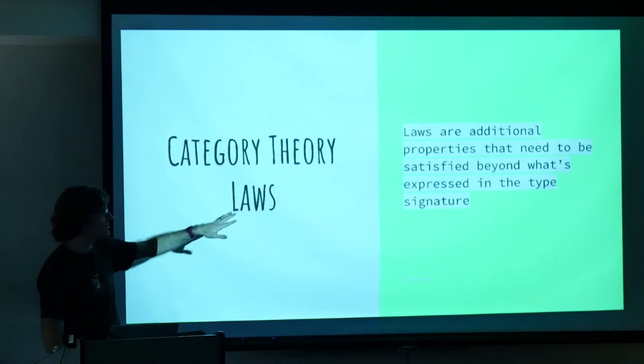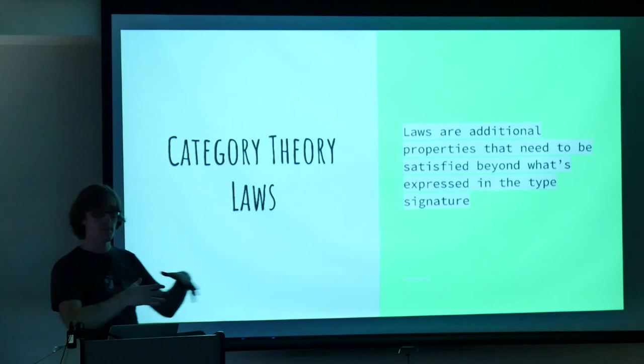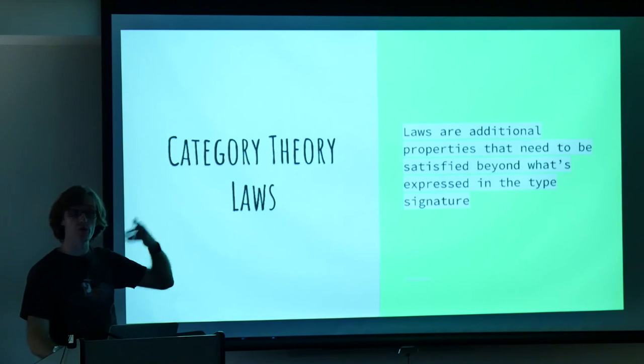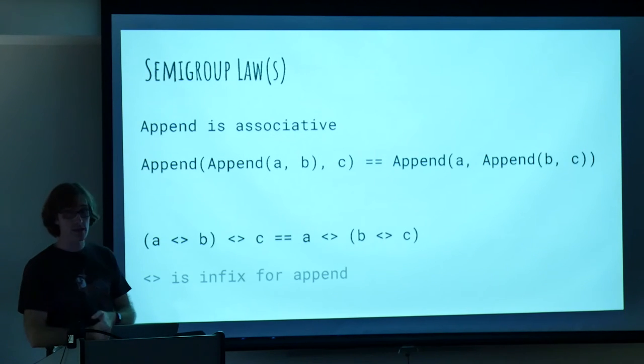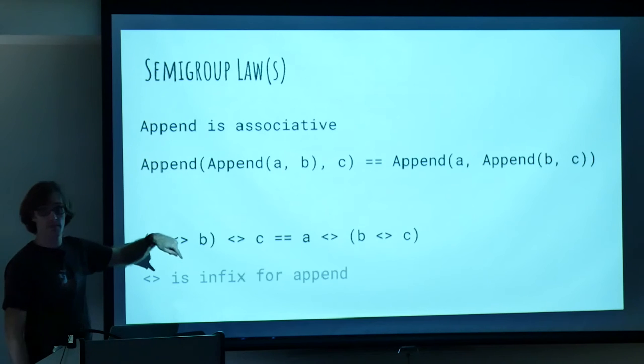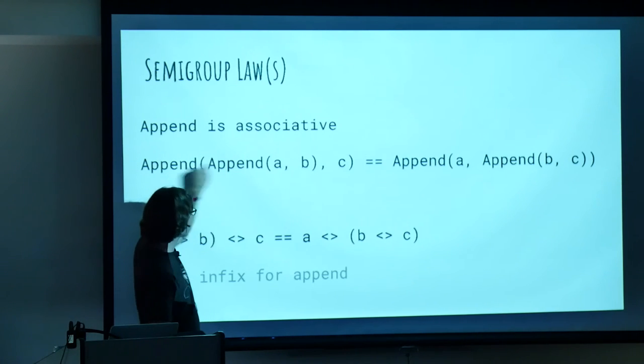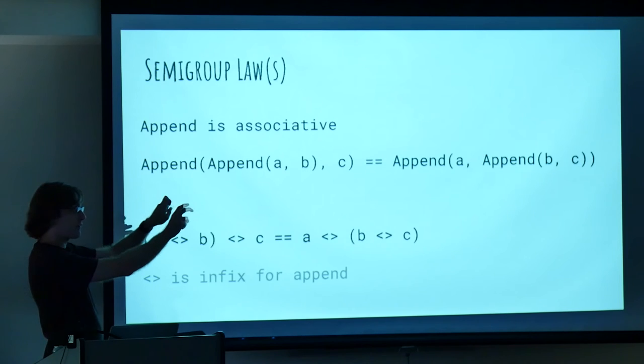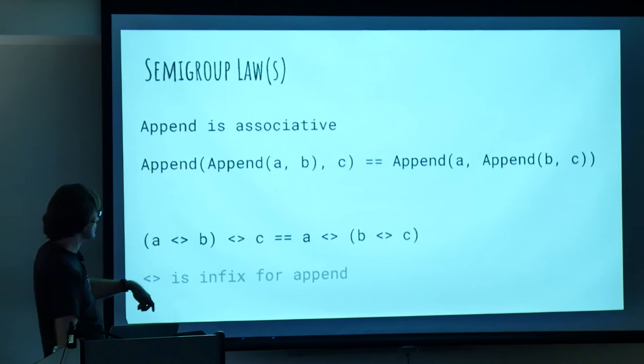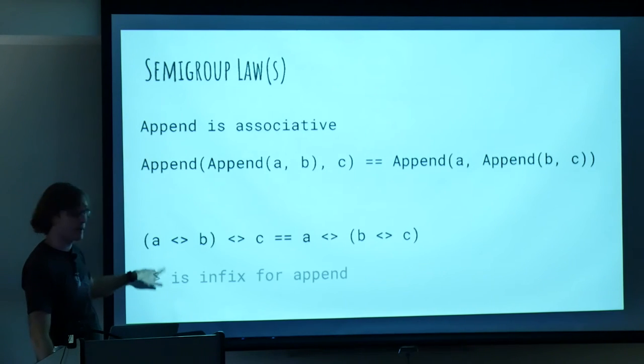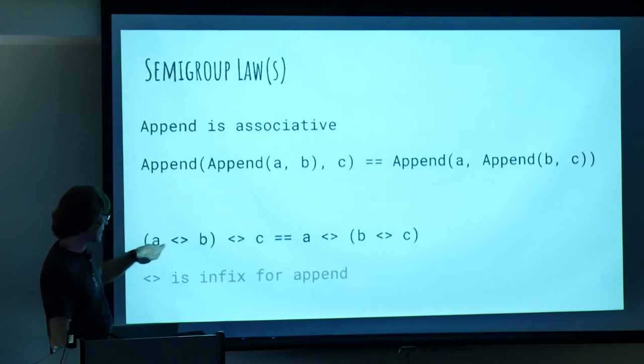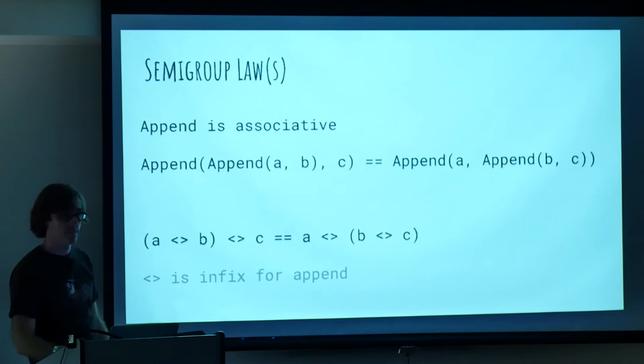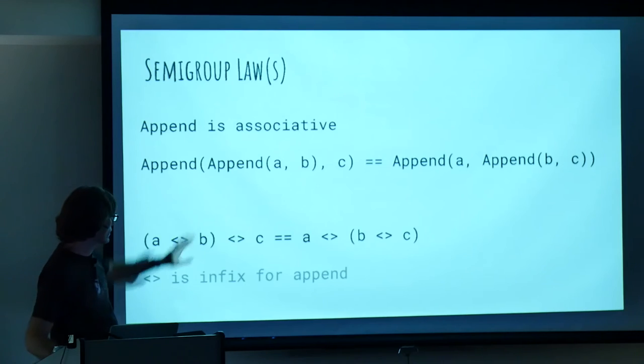So I said that a semigroup was just that one function. And in terms of functions that's correct. But then there's these extra little things which are called laws that it needs to obey. And this is a very mathy kind of thing, but it's very useful. So it's sort of additional properties that need to hold for you to be a semigroup beyond just having an append. And there's actually only one in the case of a semigroup which says that it's associative. So doing append A B and then taking that and appending it with C is the same thing as appending A with append B C.